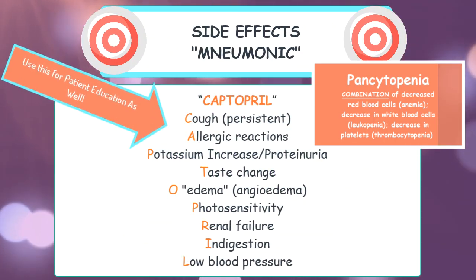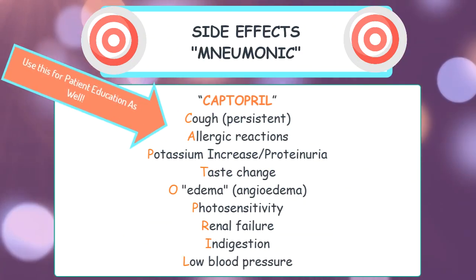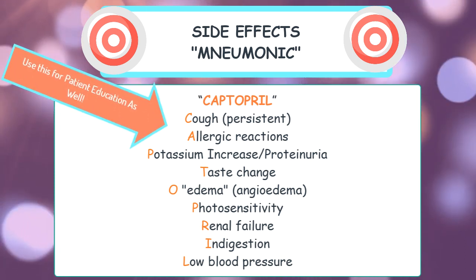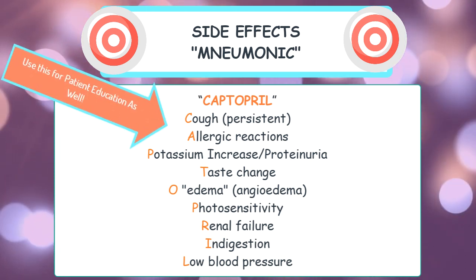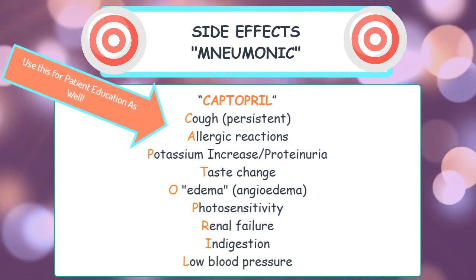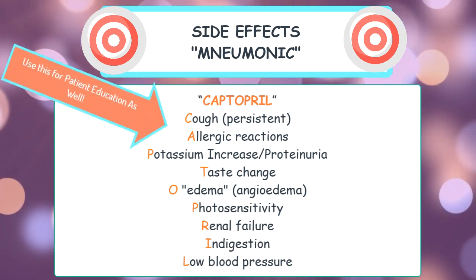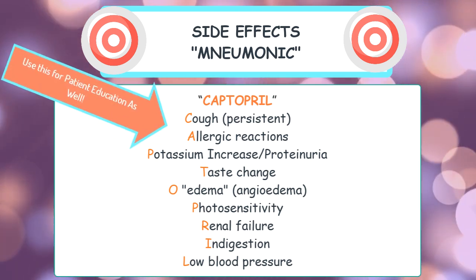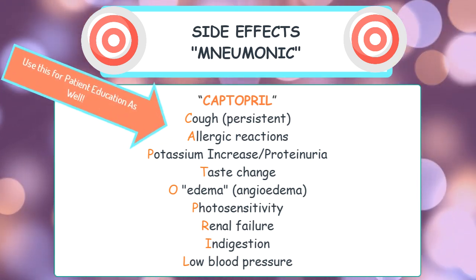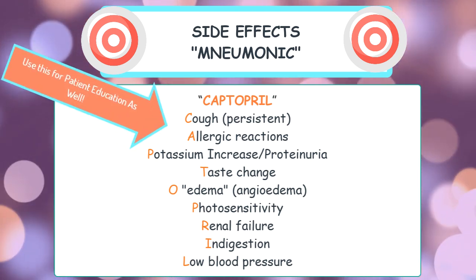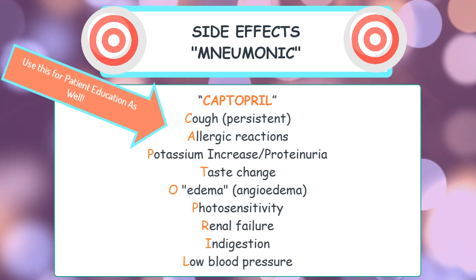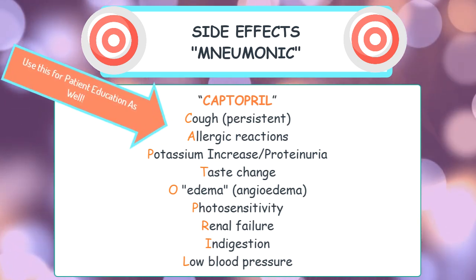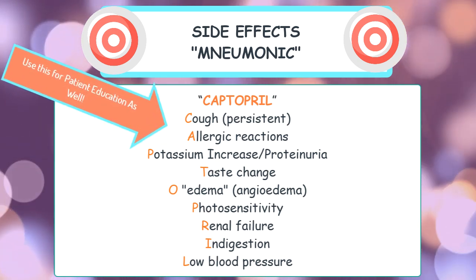ACE inhibitors do have other side effects which you as a nurse have to monitor, but an easy way to remember them is by using the mnemonic CAPTOPRIL — and as you can see, that is an ACE inhibitor too. The C is for cough — there's a persistent cough, and it can last up to a month before it subsides.